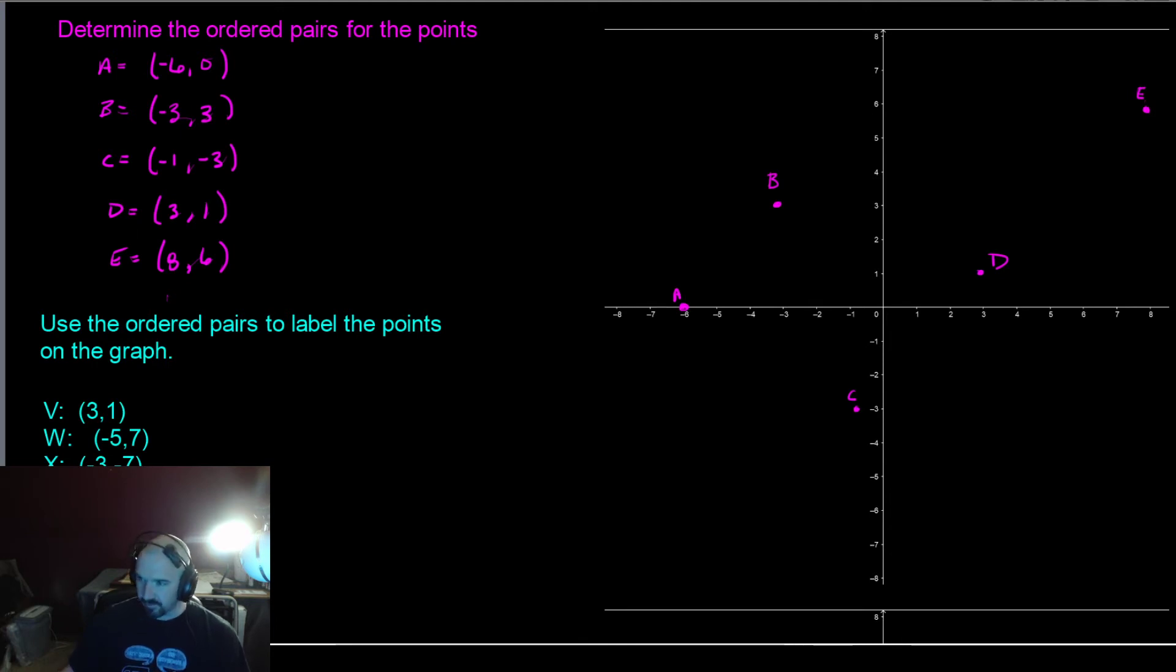Alright, on to the next set. We're given 5 points. We have to go find them on the graph. So the point 3, 1. Oh, well that's interesting. That's right here with D. So that's also V. That's fun.